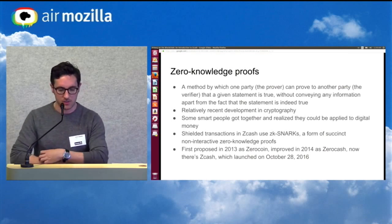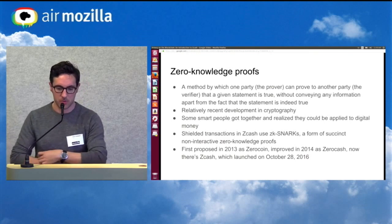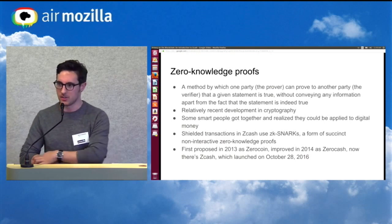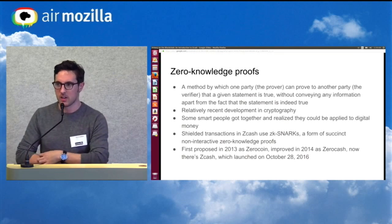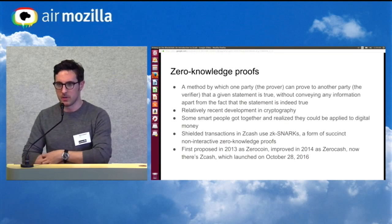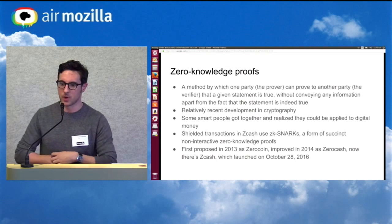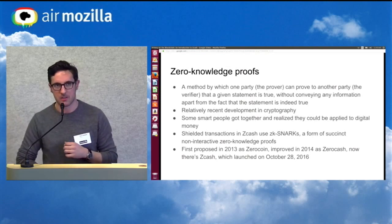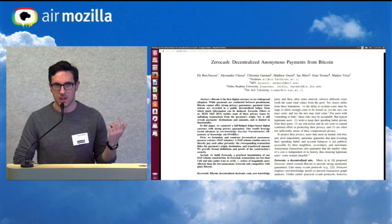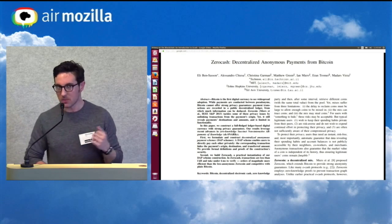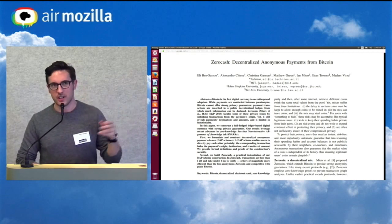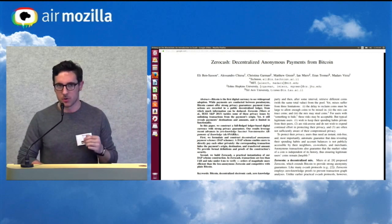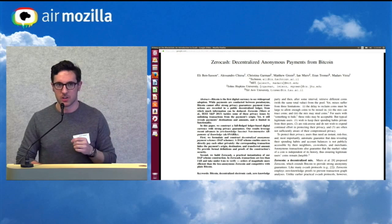The idea itself was proposed in 2013 as ZeroCoin. A year later, the scientists improved it so that it would hide not just the origin and recipient, but also the amount of the transaction. The original papers are the ZeroCoin and ZeroCash papers, and those are both online if you want to look into it more.